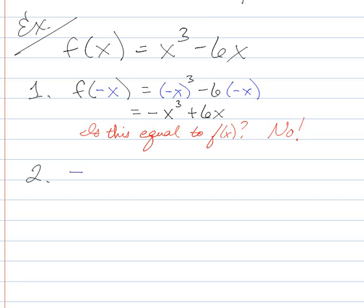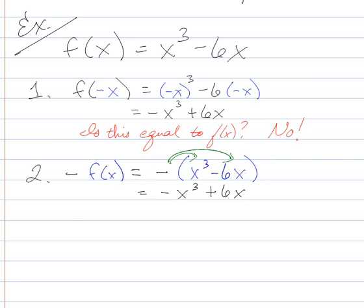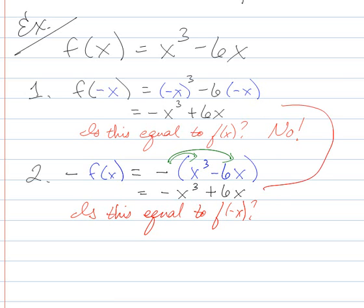Step 2 says we need to calculate negative f of x. So we're going to say negative f of x, distribute my negative across: negative x cubed plus 6x. So is this equal to f of negative x? Is that equal to what we got in the first step? Yes it is. Fantastic. So that means that we have an odd function.